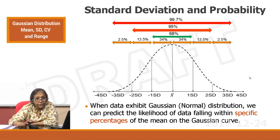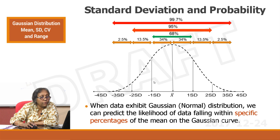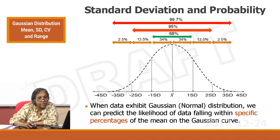The probability distribution and percentage distribution around the mean: 68% falls between minus 1 SD and plus 1 SD; 95% falls between minus 2 SD and plus 2 SD; and 99.7% falls between minus 3 SD and plus 3 SD.